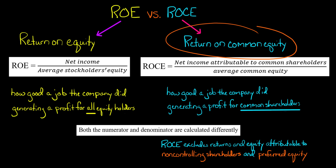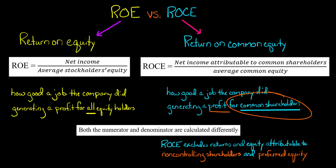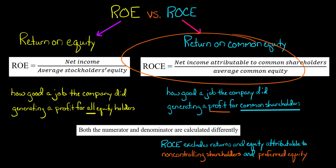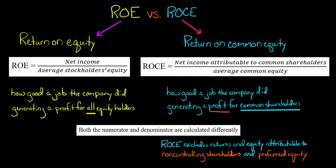Return on common equity, on the other hand, just focuses on how good a job the company did generating a profit for its common shareholders. So you'll notice in our formula for return on common equity, in the numerator, we're just focusing on net income attributable to common shareholders.